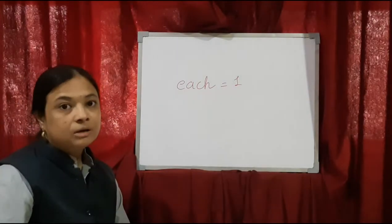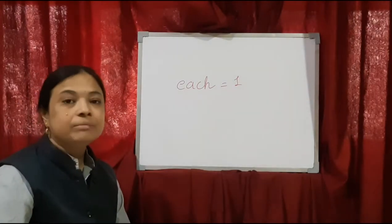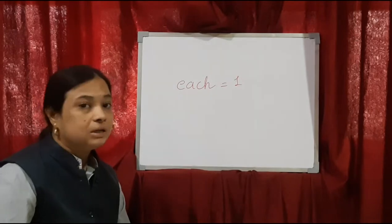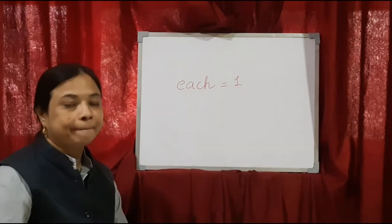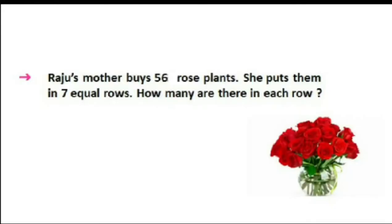Now we will go with the sum and then we will understand. So what is the sum given here? Raju's mother buys 56 rose plants. That means Raju ki mother ne kitne rose plants buy kiye? 56.